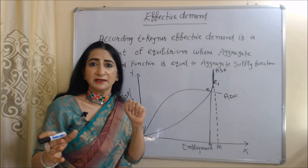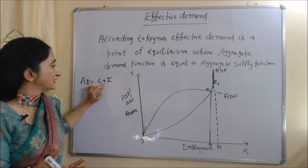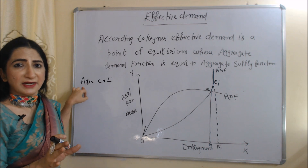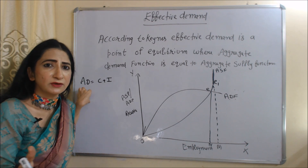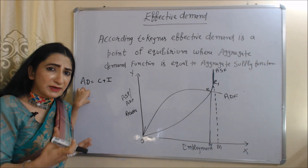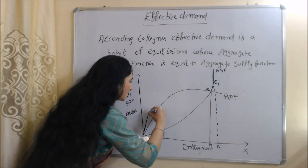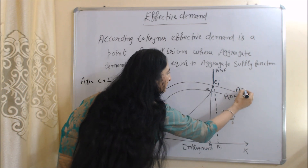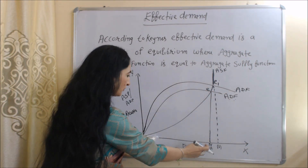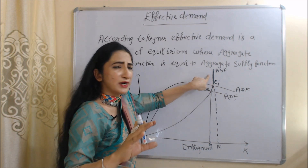According to Keynes, an increase in aggregate demand can increase employment. Aggregate demand depends on C plus I, where C is consumption expenditure and I is investment expenditure. During the short time period, consumption remains fairly constant, so by increasing investment we can increase aggregate demand. Since aggregate demand is low, the private sector will not invest as its main motive is profit. Therefore, government intervention is necessary — as the government increases investment, aggregate demand increases, shifting the ADF curve from ADF to ADF1, achieving the full employment level.